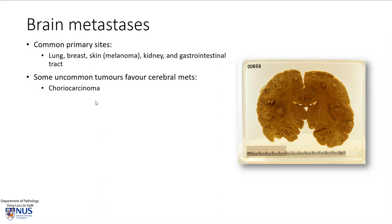There are also some uncommon tumors that tend to favor cerebral metastases, and one example is choriocarcinoma, which is a germ cell tumor. This tumor has a characteristic gross appearance because the tumor cells tend to invade blood vessels, so these are very hemorrhagic tumors, and grossly they will appear blackish.